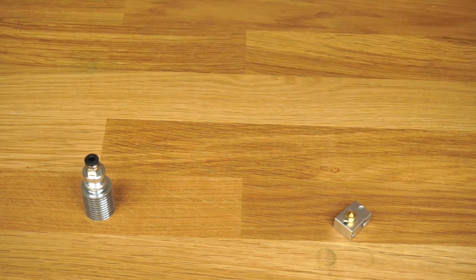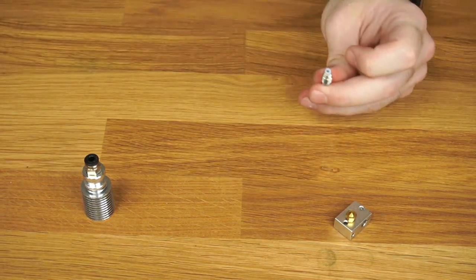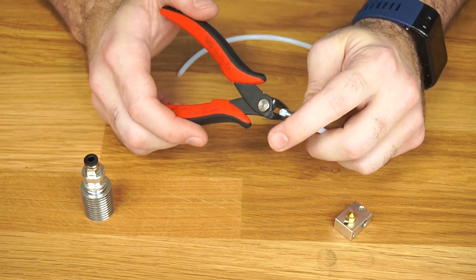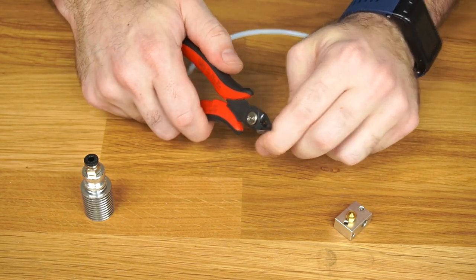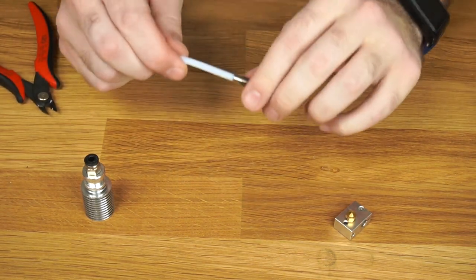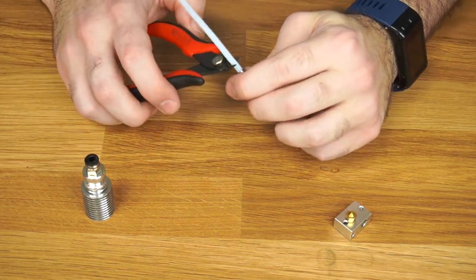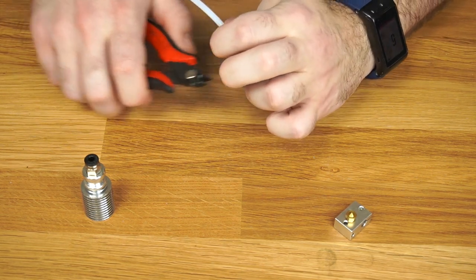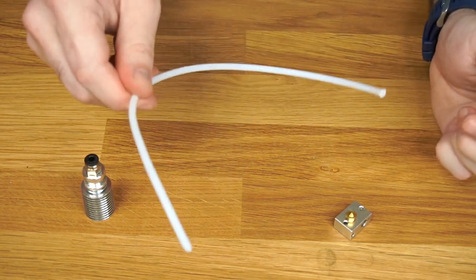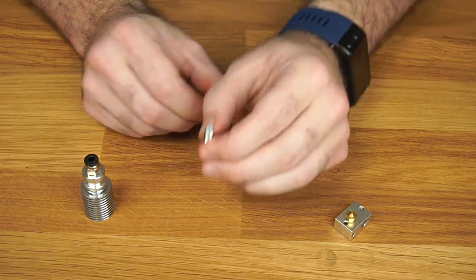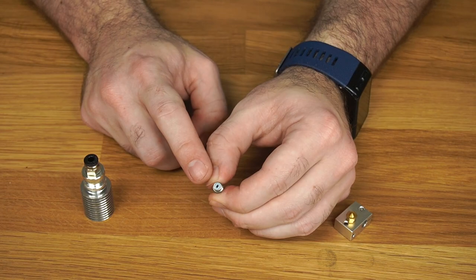So now that that's flush in there, you can take some flush cutters and cut the end of this off just like that. And we can do the same thing on the other side. We'll take this and save it for later. And so now we've got this tubing inserted inside our heat brake.